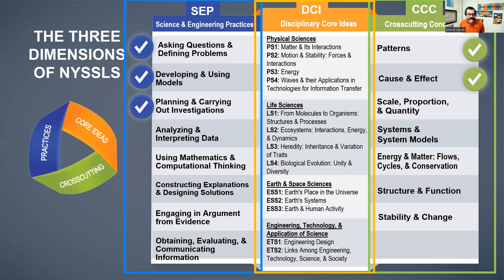The third dimension is the disciplinary core ideas, or DCIs. These four components — the physical sciences, the life sciences, the earth and space sciences, and the engineering technology and application of science — are all the science core ideas we work with. I use specifically 'core ideas' and not 'content,' because content tends to suggest a list of facts to memorize. Disciplinary core ideas are different — they're what's at the heart of the discipline students are studying. So these three dimensions are the core of everything in the New York State K-12 science learning standards.